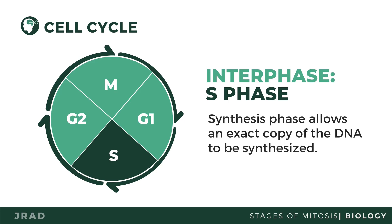The S phase is particularly important as the cell will later undergo mitosis, where the exact same amount of DNA with the same genetic material will be partitioned to the daughter cells. The replication of DNA in the S phase ensures that the cell will have two copies of genetic material that can be inherited by the daughter cells during mitosis.